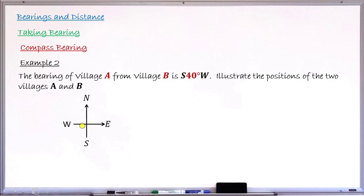These are the four major cardinal points, giving me the position of Village B. The bearing says south 40 degrees west — so it starts with south, then the angle is 40 degrees towards west. I'll now start measuring the angle from the line pointing south towards west — 40 degrees. It is along this line that the direction of Village A will be. Remember: compressed bearing always starts with either north or south and ends with either east or west.